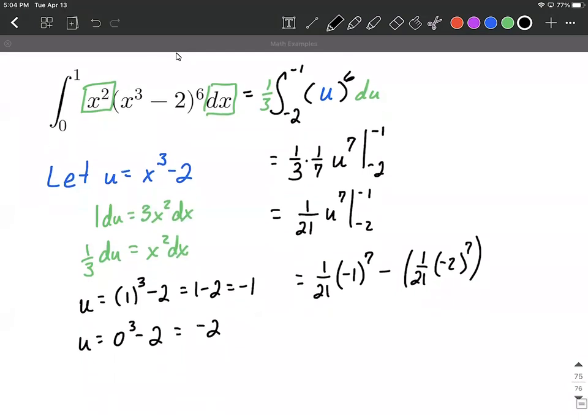A little simplifying and we're almost there. Negative one to the seventh power is seven copies of a negative, so that's negative overall. One over twenty-one. Again, negative two—we have seven copies of a negative. That's going to make a negative overall, but we're already subtracting, so let's make that addition.